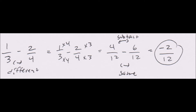This is one-third minus two-fourths. Three and four don't share any common multiples, so if you can't find common multiples between two denominators, just multiply each denominator by the other. Multiply one-third by four and two-fourths by three. You get four-twelfths and six-twelfths, because three times four and four times three both equal twelve. Then subtract: four minus six is negative two, so you get negative two-twelfths. Reduced, that's negative one-sixth.